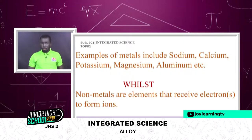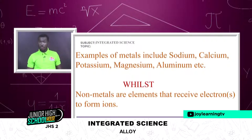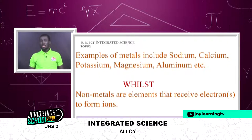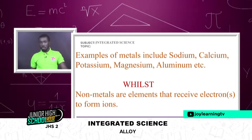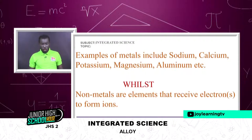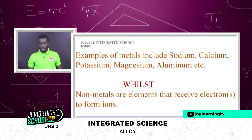Now let's look at some examples of metals. We have sodium, calcium, potassium, magnesium, and aluminium. There are others in the periodic table, but I expected you to give two examples. Here I've given more than two, so you can choose any of them.